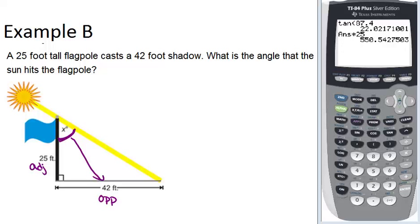So that means, again, we're dealing with tangent. The equation would be tangent of angle X equals 42, which is the opposite side, over 25, which is the adjacent side.